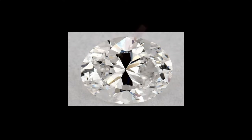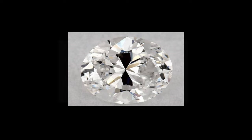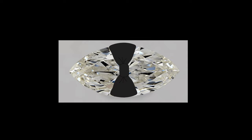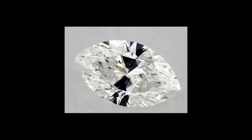First of all, what is the bowtie effect? The bowtie effect is when there is a large dark spot across the middle of your diamond where no light is being reflected back out of the diamond. As you can tell from these pictures, it looks like that dark spot in the middle of the diamond is a bowtie — that's where it gets its name. And as you can also tell from these pictures, it is a very unflattering look to have.